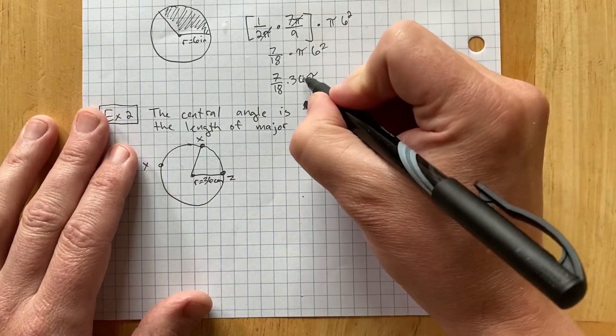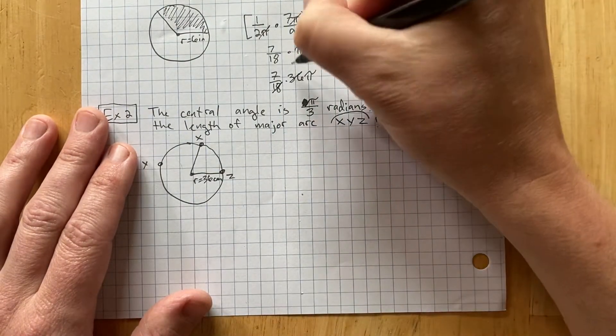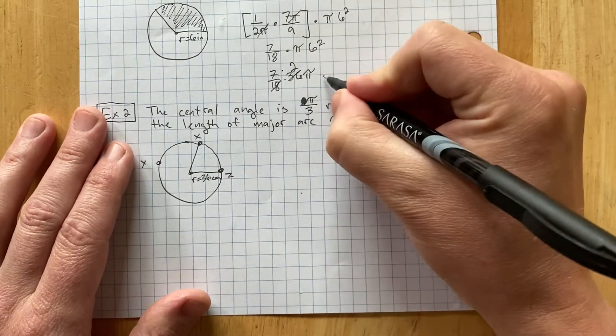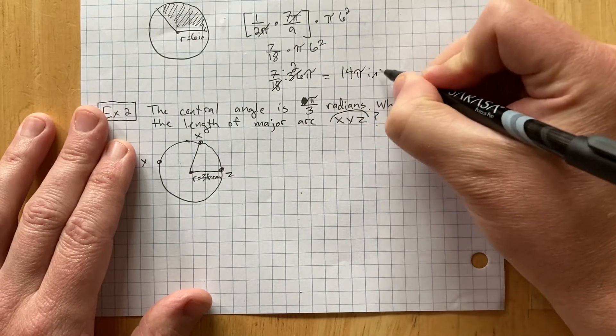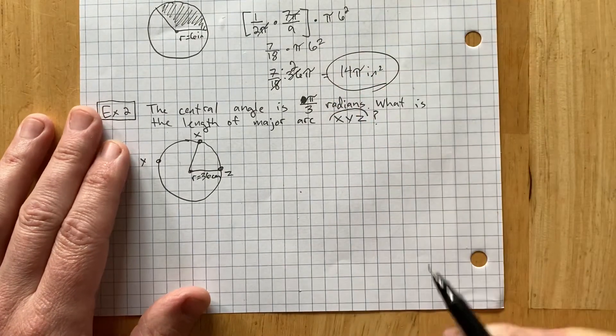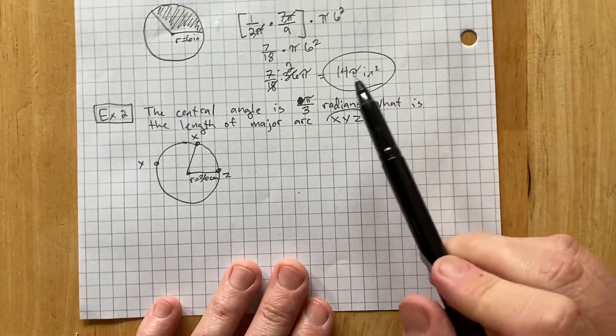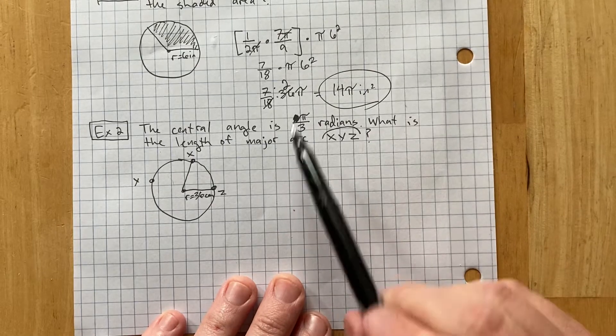And now, instead of doing 7 times 36, I'm going to cross-cancel. 36 divided by 18 is 2. And 18 divided by 18 is 1. And so, the answer to this problem was 14 pi square inches. Again, get out your calculator if you really want to. And you can figure out what that equals as a decimal approximation. But it's 14 times pi. And I just reduced everything to show you that that's how it works.